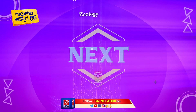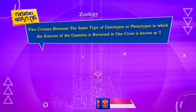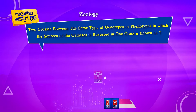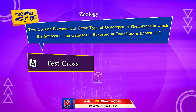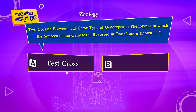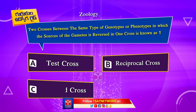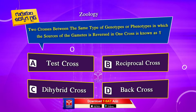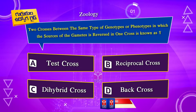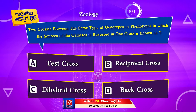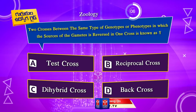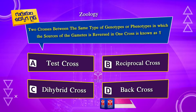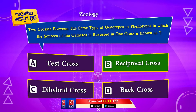Next question. Two crosses between the same type of genotypes or phenotypes in which the sources of the gametes is reversed in one cross is known as: Option A. Test cross. Option B. Reciprocal cross. Option C. Dihybrid cross. Option D. Back cross. The correct answer is Option B. Reciprocal cross.